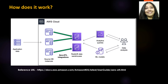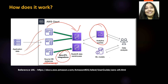Now let us see how Zero ETL works. As you can see, you have application data stored in your Amazon RDS DB instances, and you have a Zero ETL connection between your source instances and your Redshift data warehouse. Once you have a Zero ETL integration set up, it provides continuous data updates — your data will be replicated from your source DB to your target data warehouse continuously and in a near real-time scenario. Once that replication happens, you can have analytical queries or ML models working on top of it.